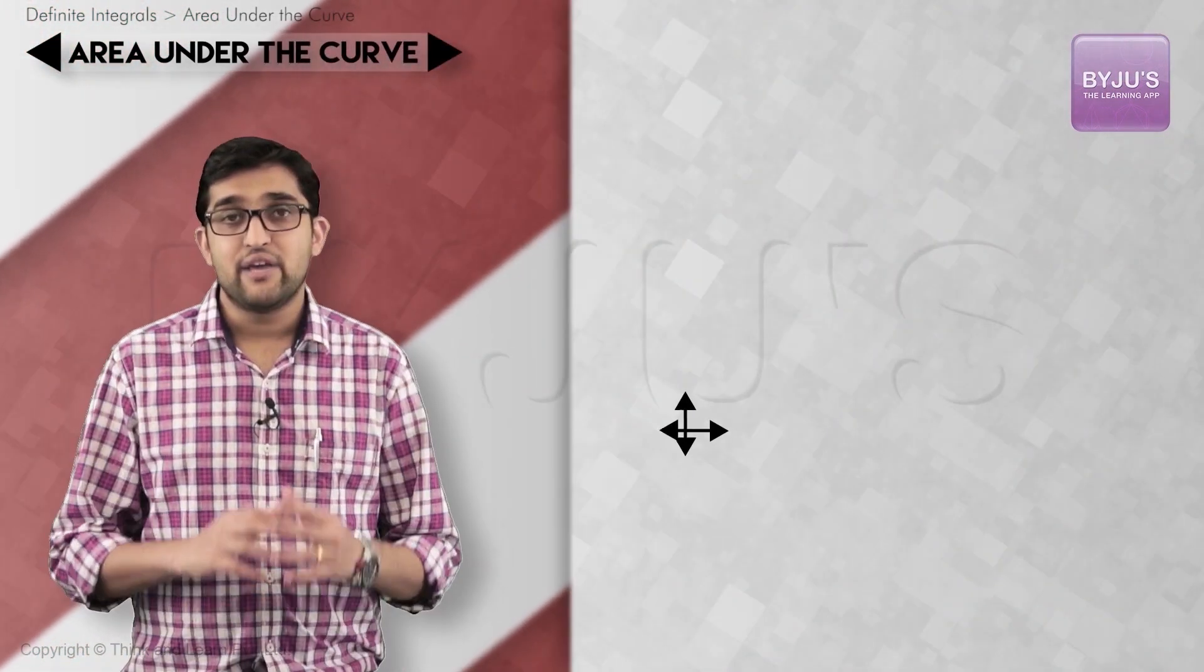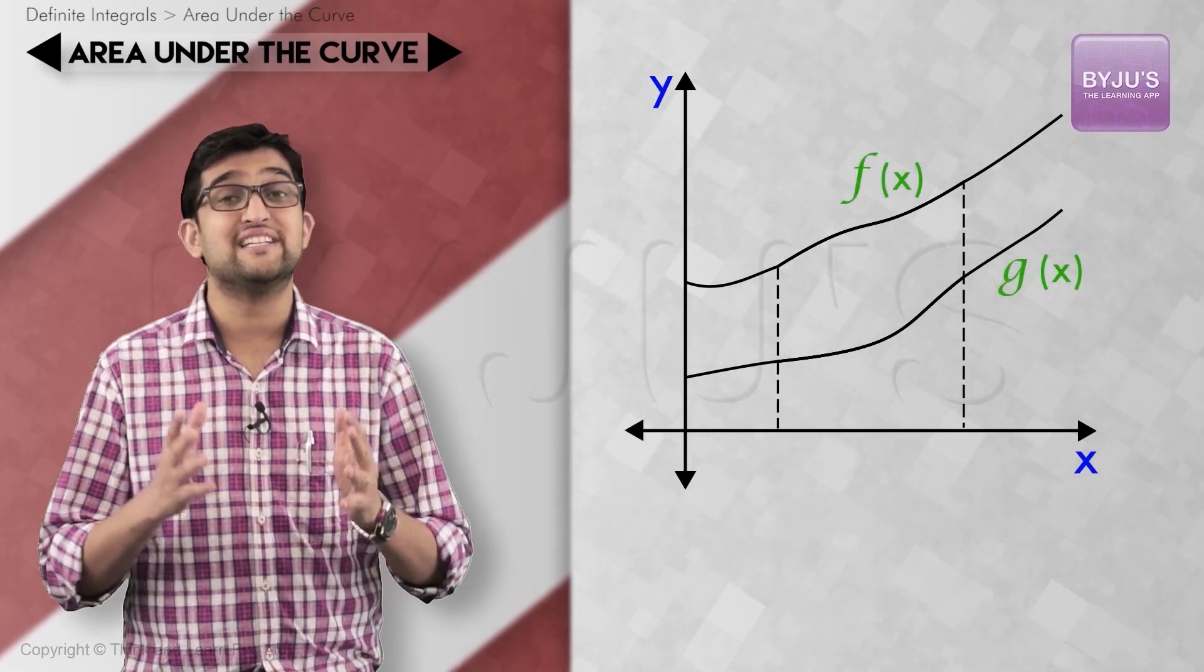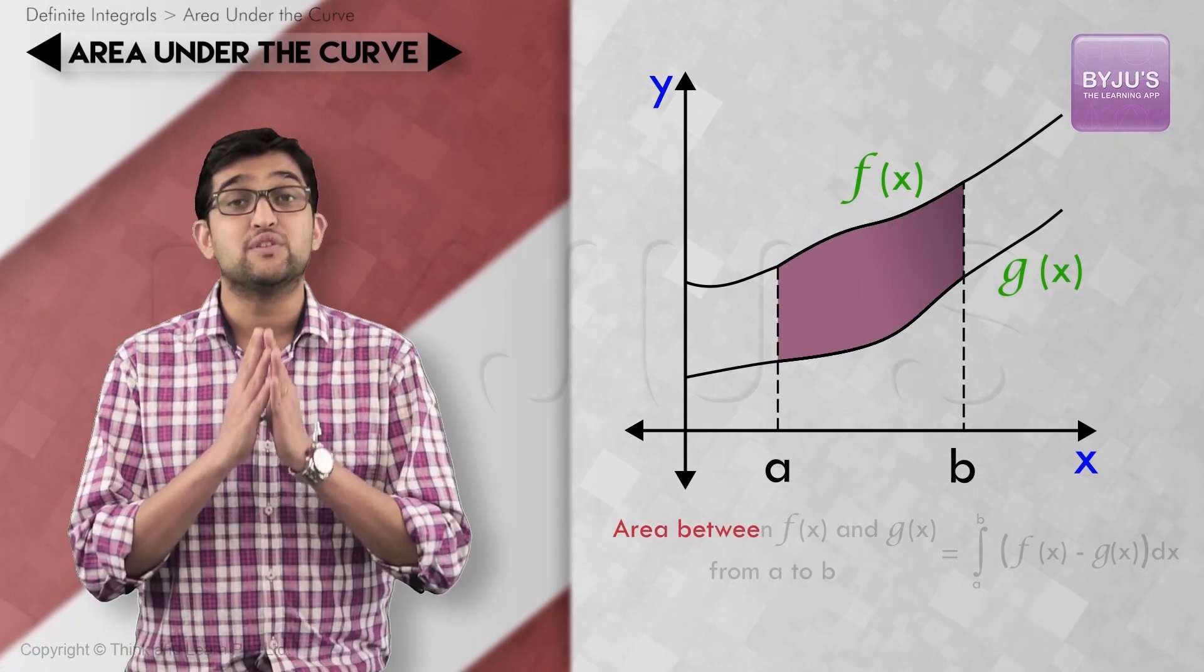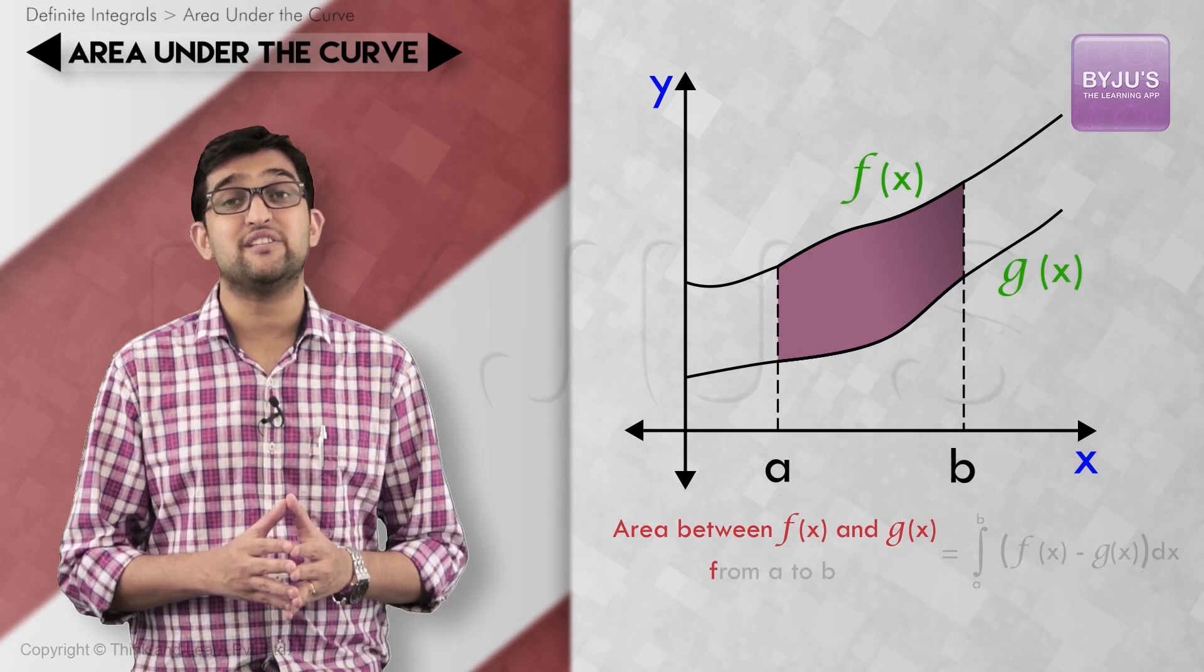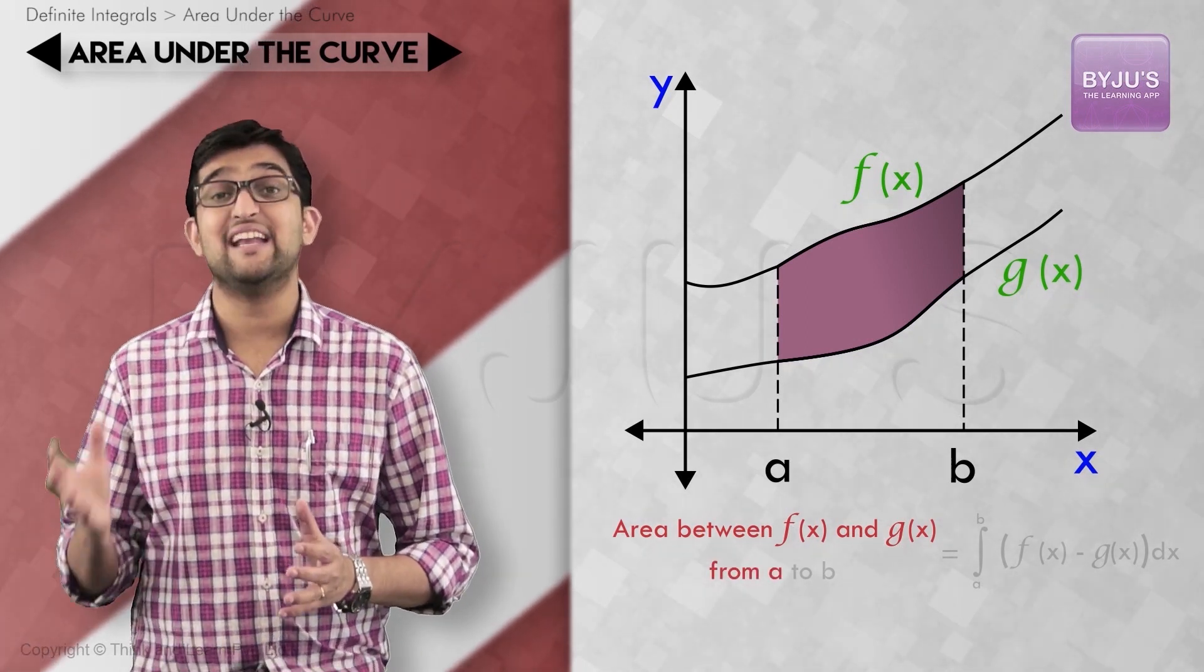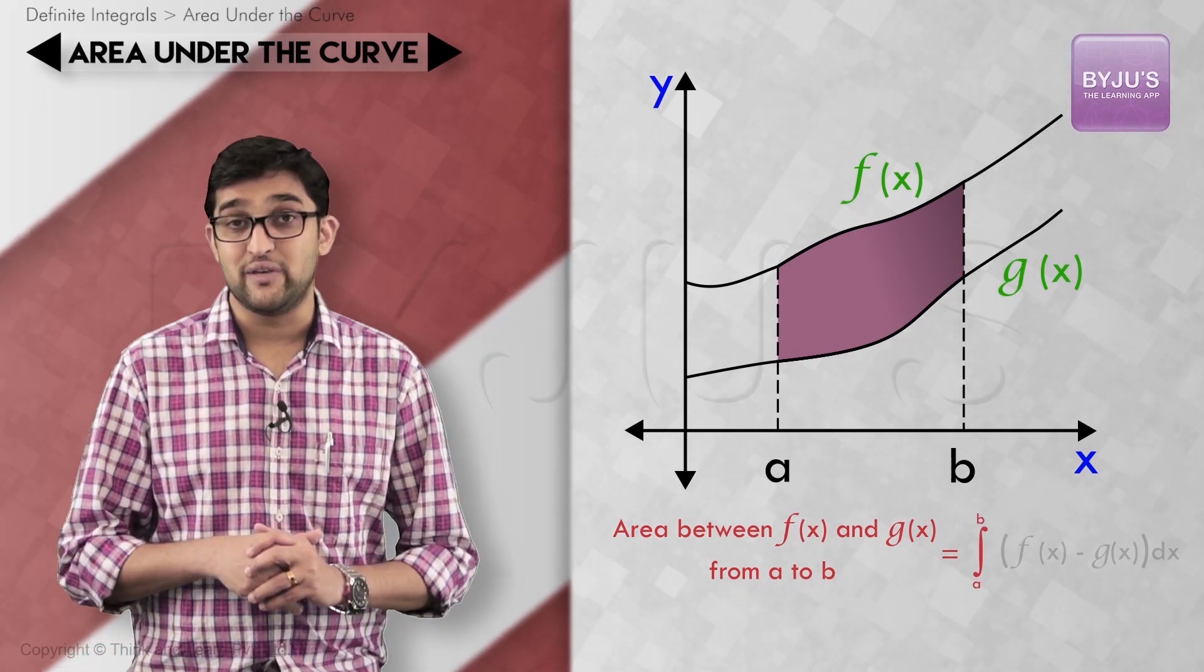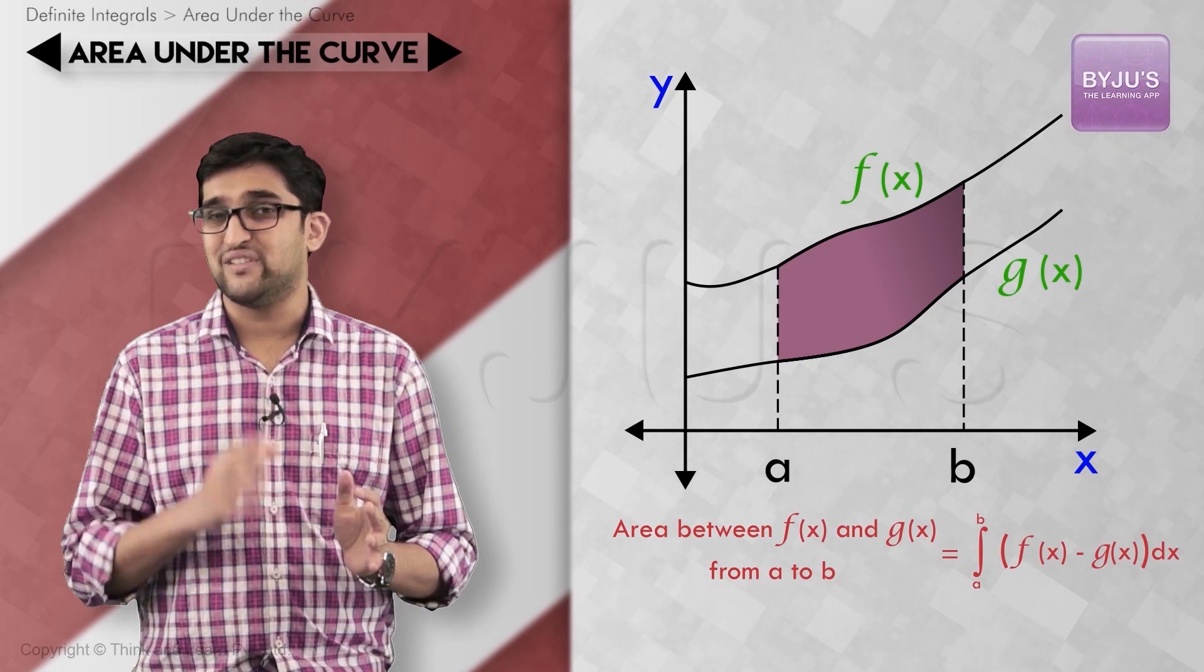But for now, let's see how do we compute this. If f(x) is greater than or equal to g(x) for x on the closed interval [a,b], then the area bounded by the curves y equals f(x) and y equals g(x) between the abscissas x equals a and x equals b is given by integral a to b [f(x) minus g(x)] dx. Let's try this out with an example now.